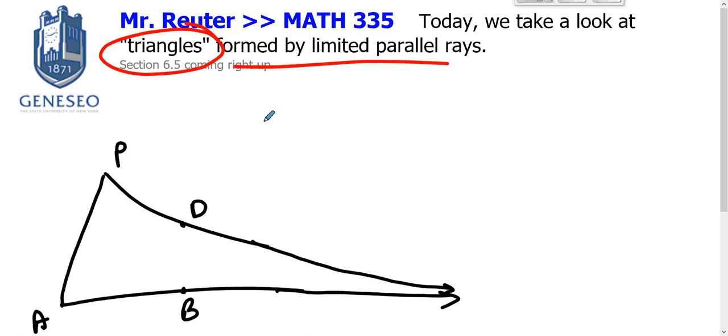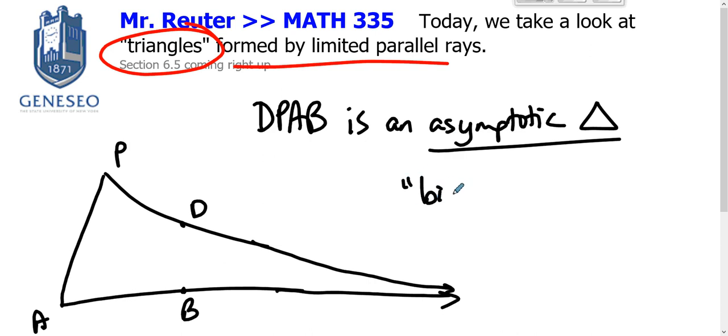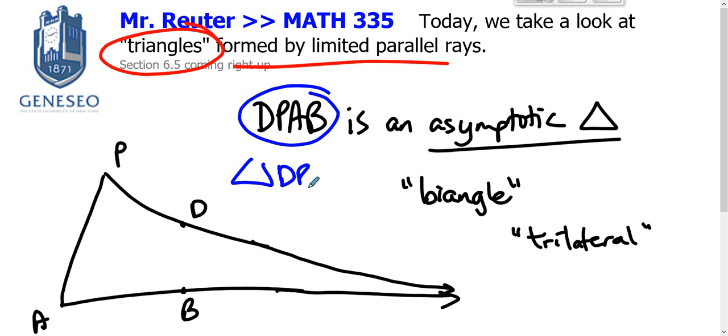In fact, DP AB is called an asymptotic triangle. It's a terrible name, but then again, bi-angle is a terrible name, trilateral is a terrible name. I've seen some textbooks call this the asymptotic triangle DP AB, where it's almost a triangle symbol but doesn't quite get there.